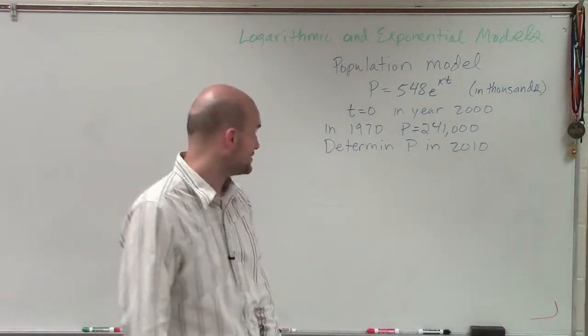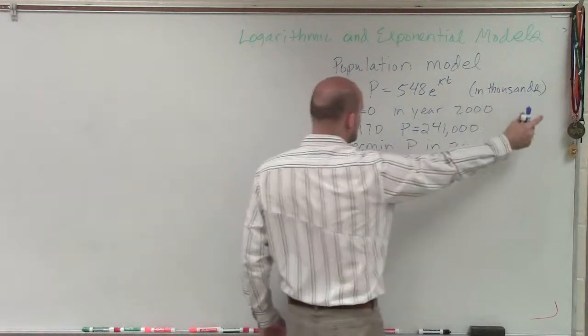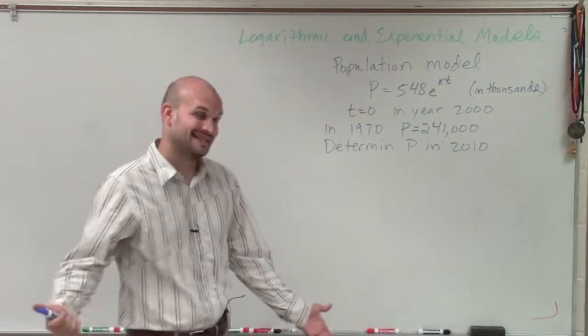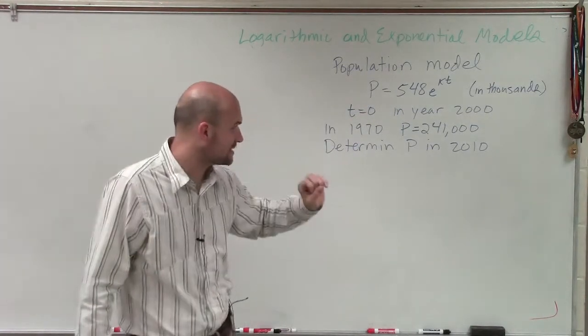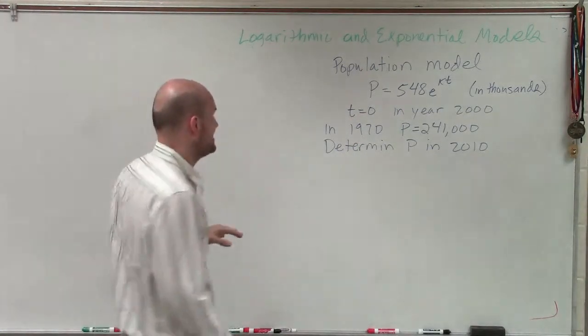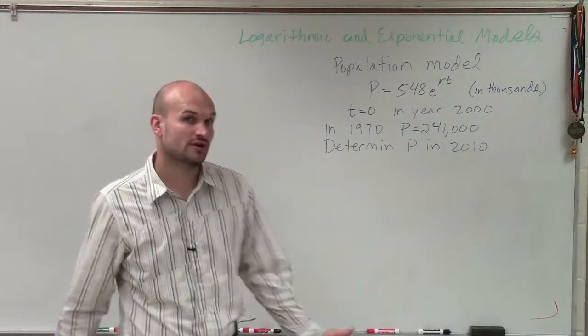And t is going to represent the years. Remember, 548 is in thousands, so that's really 548,000. They say at t equals 0 in year 2000. Then they say in 1970, the population was 241,000.